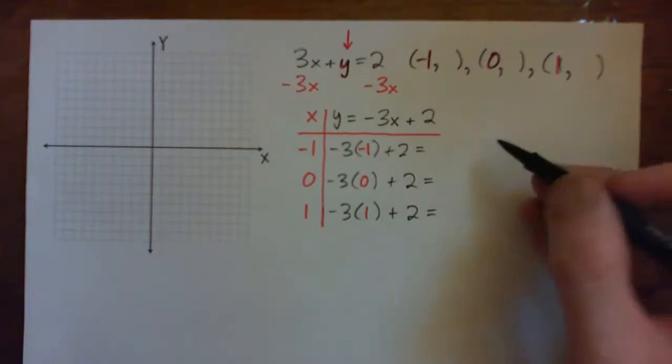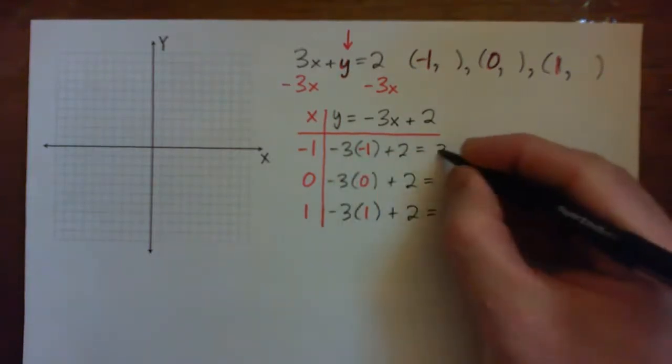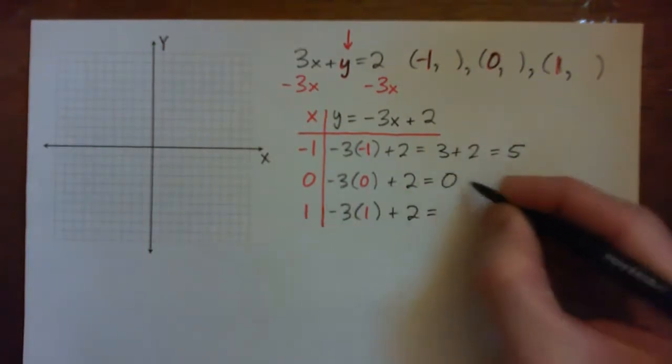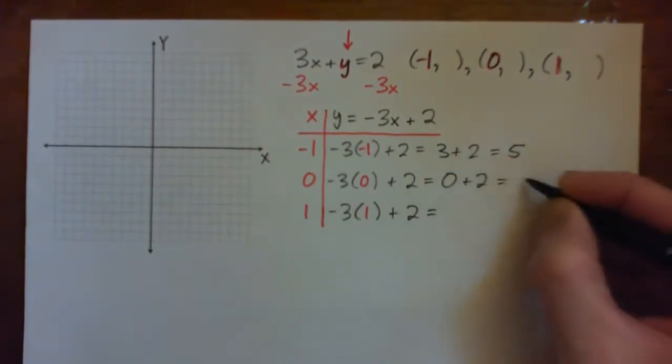Okay, I'm going to go through it quickly now. Negative 3 times negative 1 is 3. 3 plus 2 is 5. Negative 3 times 0 is 0. 0 plus 2 is 2.